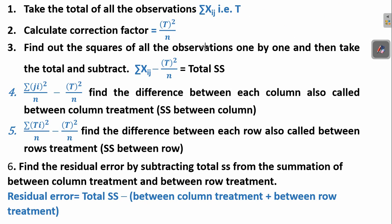After that, we calculate the correction factor by simply squaring the total T value and dividing it by the total number of observations we have.